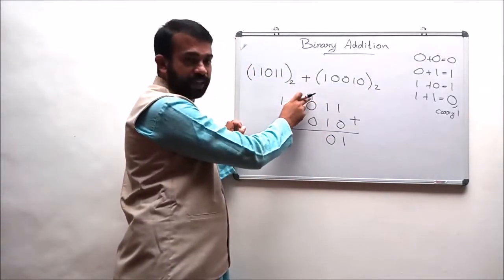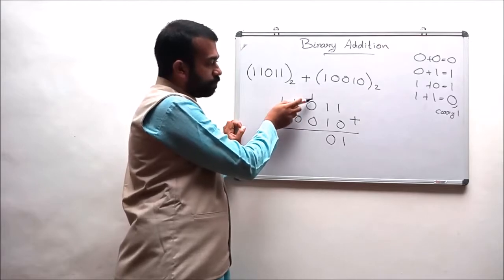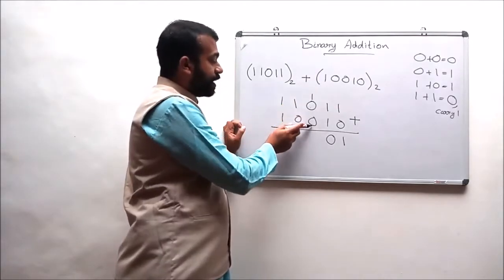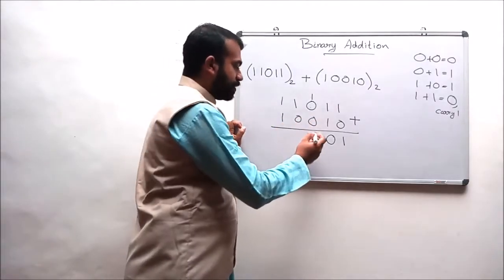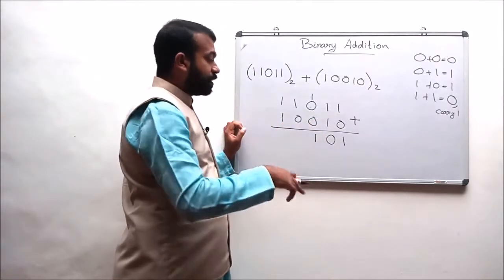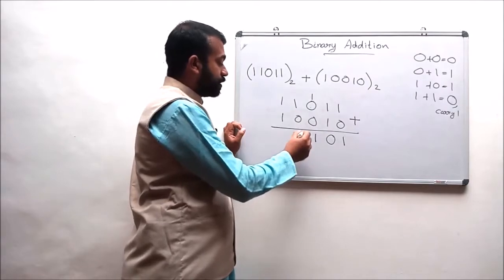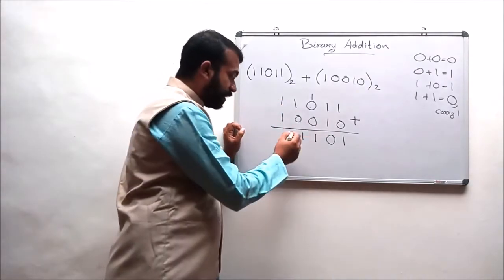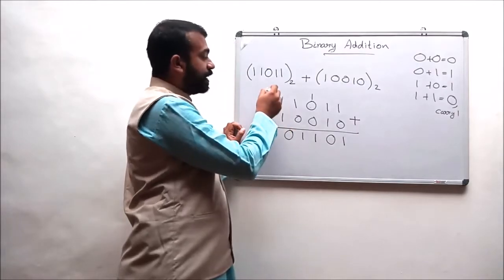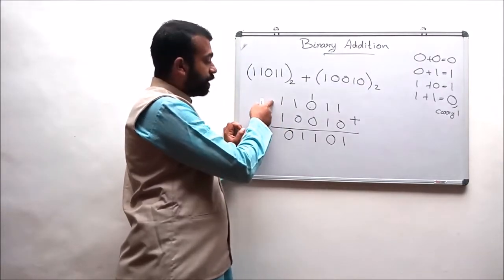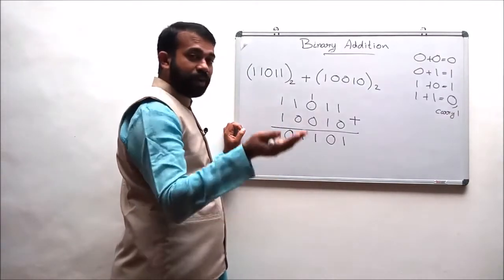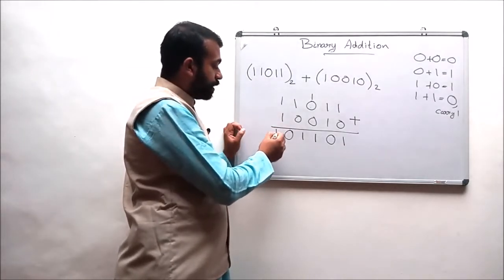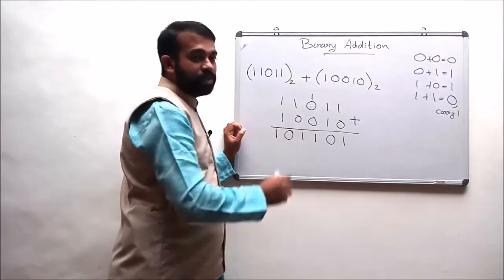1 plus 1 will result in 0 with a carry of 1. So that 1 is carried to the next position. We are adding 1 plus 0 — 1 plus 0 is 1 — and that 1 is adding with 0, so 1 plus 0 is again 1. So here we have no other numbers.